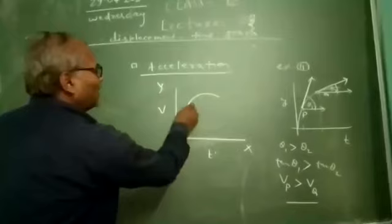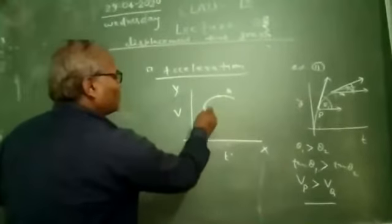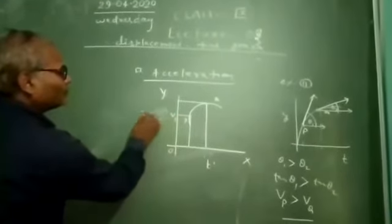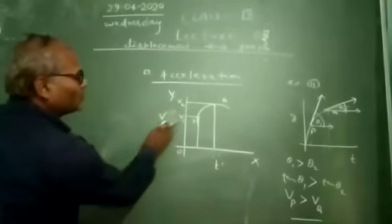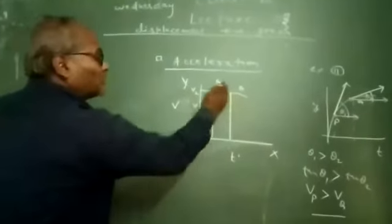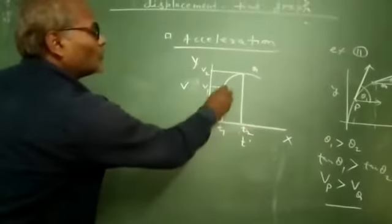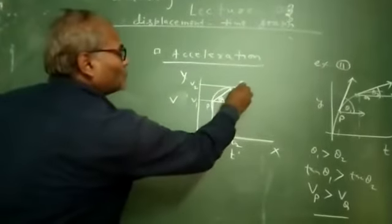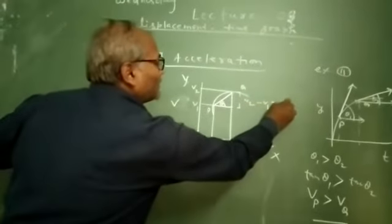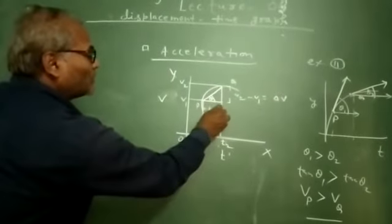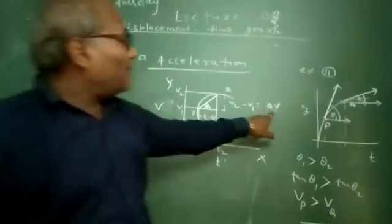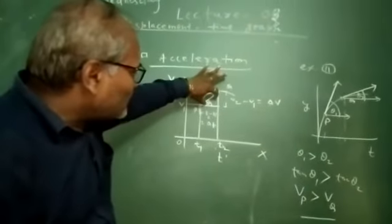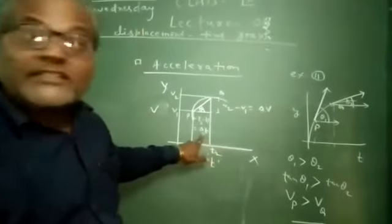We take the graph and consider two points P and Q. We draw two perpendicular lines representing V1 — the velocity at point P — and V2 — the velocity at point Q — at times T1 and T2 respectively. We draw the shortest line and a perpendicular line, forming a triangle with angle theta. This gives V2 minus V1, which is delta V, and T2 minus T1, which is delta T. So tan theta equals delta V upon delta T, which is the rate of change of velocity.